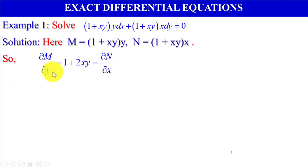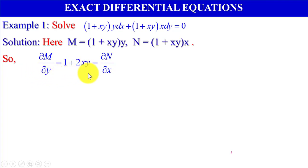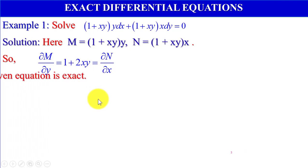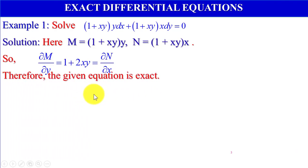Therefore, partial differentiation of M with respect to y, that is del M by del y, equals 1 plus 2xy, which equals the partial differentiation of N with respect to x. Therefore, by the theorem on exact differential equations, the given equation is exact.